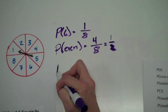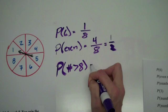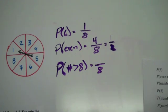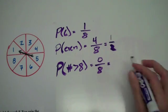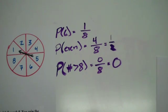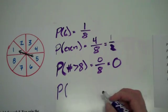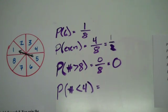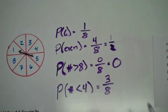The third one is the probability of a number that is greater than eight. We still have eight total possible outcomes, but if we want a number greater than eight, our largest number is eight, so we can't have a number greater than eight. That means our probability is zero, which means it is never going to happen. This next one is the probability that the number is less than four. We've got our eight total possible outcomes, and a number less than four — not including four — would be three, two, one, which is three out of eight.